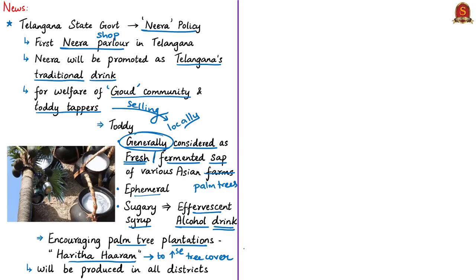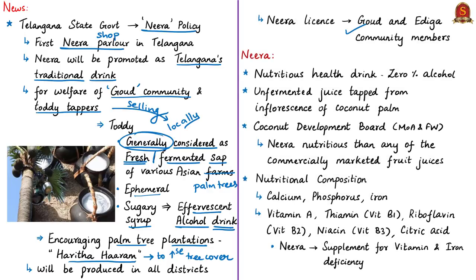The Neera license will be given only to Goud and Ediga community members, as per the directions of the Chief Minister of Telangana. Neera is a nutritious health drink with 0% alcohol — it is the unfermented juice tapped from the inflorescence of the coconut palm. Since it is a nutritious health drink, it is an important revenue-generating product of the palm tree.